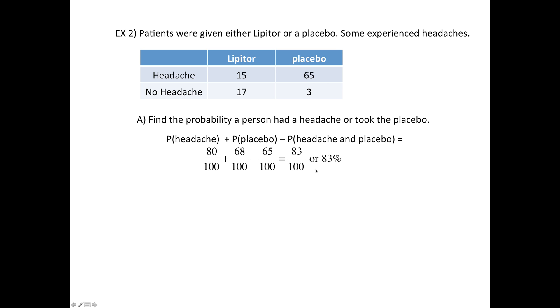From the same table, find the probability a person had Lipitor with a headache. That's actually these 15 people. Or they took the placebo but they did not get a headache. So that's these three—they took the placebo and did not get a headache.